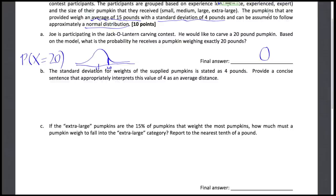So the standard deviation for weights of the supplied pumpkins is stated as 4 pounds. We now need to provide a concise sentence that appropriately interprets this value of 4 as an average distance. So here I'll write down a good interpretation and identify the parts that are necessary for this interpretation.